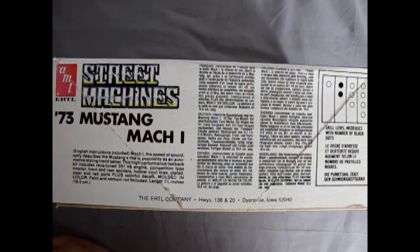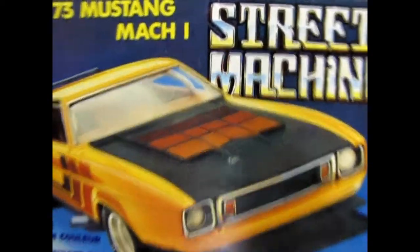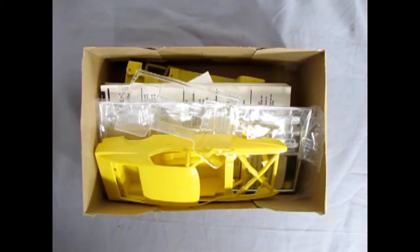Molded in color, paint and cement not included. Length is seven and a half inches or 19.5 centimeters. Now let's take off the lid of our 73 Mustang Mach 1 street machines and see what's inside.